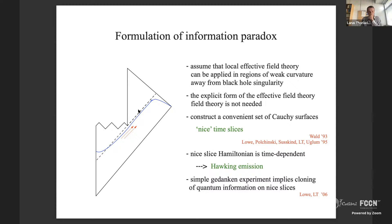You can qualitatively understand why there is particle emission because once you've constructed these nice slices, the generator of time translations from one nice slice to the next is not precisely a Killing vector — it asymptotes to that, but it's not. So your Hamiltonian on these nice slices is time-dependent, and that leads to particle production. This is not a very practical way to compute Hawking emission, but you can understand how it comes about.